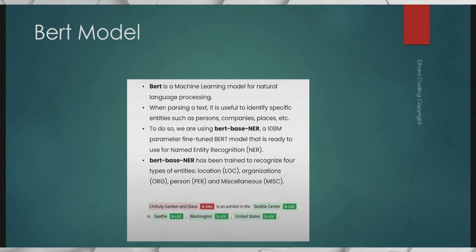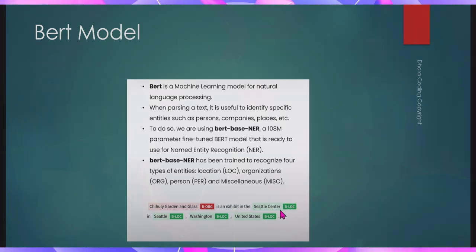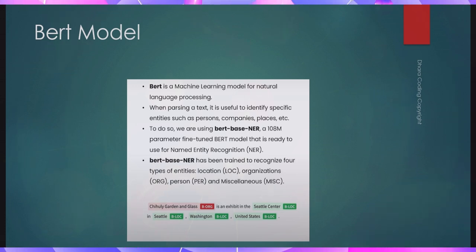This is very useful to identify and segregate things. If you want to filter out names from your sentence, filter out locations, you can use this. It can also be used for data analysis because you can use these features to identify whether something belongs to a location or an organization. Let's see the code now.